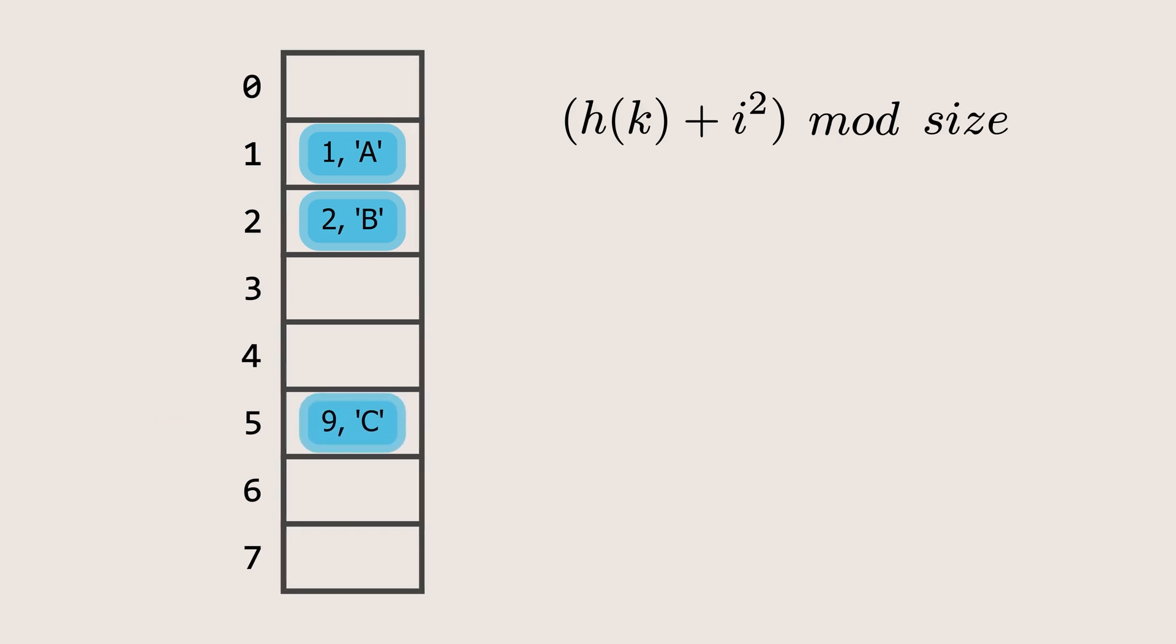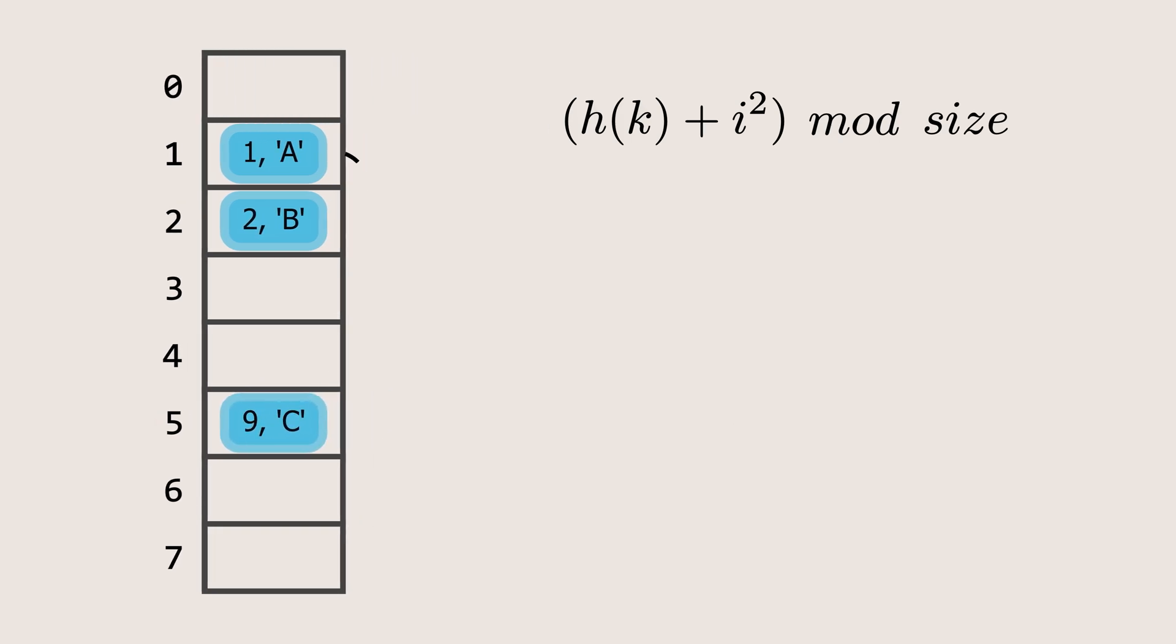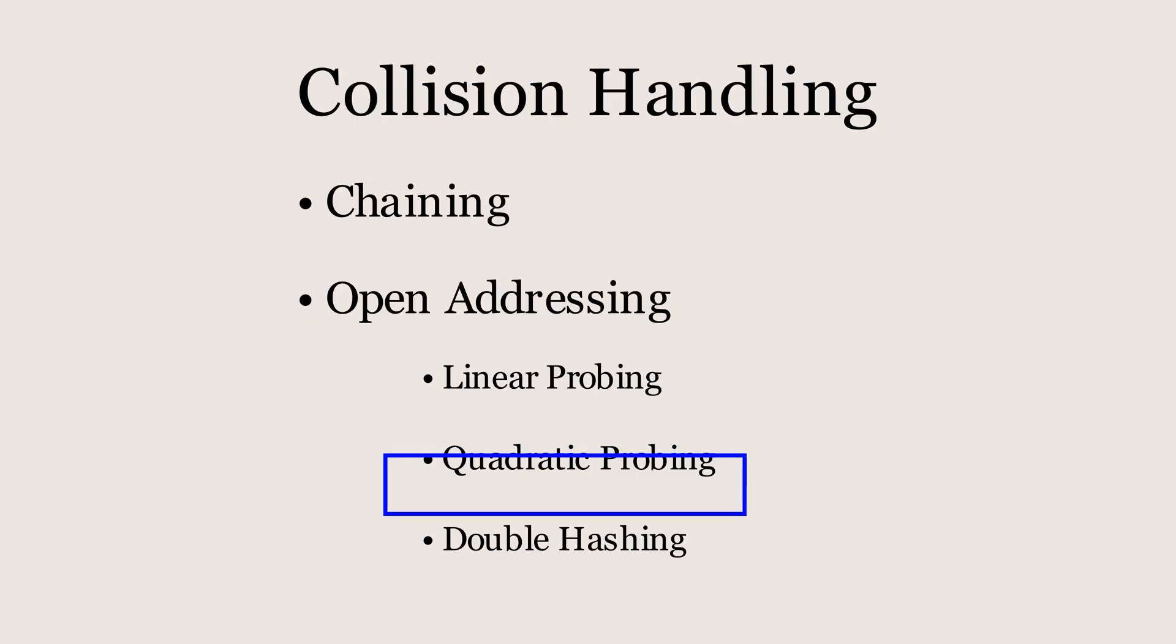This technique works well for larger arrays. However, if you observe the pattern, you'll notice that in the next iteration, it can go back to an already visited index, like index 2, and get stuck in a cycle. Double hashing can solve the issue of cycles. So let's look at how this technique works next.